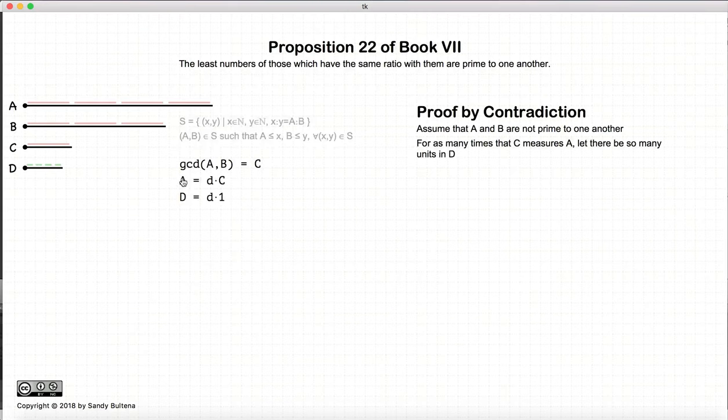Now if C measures A, let's create a number D, so that the unit number 1 measures D the same number of times that C measures A. So C measures A four times, and the unit number measures D four times. Then according to definition 15, A is equal to C times D. So this is the definition of multiplication.